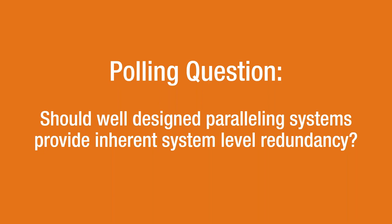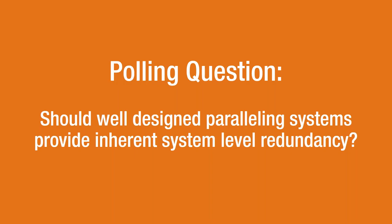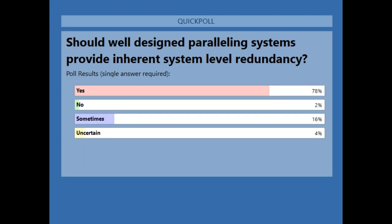Third polling question: should well-designed paralleling systems provide inherent system-level redundancy? Options: yes, no, sometimes, or uncertain. Most of you chose yes.